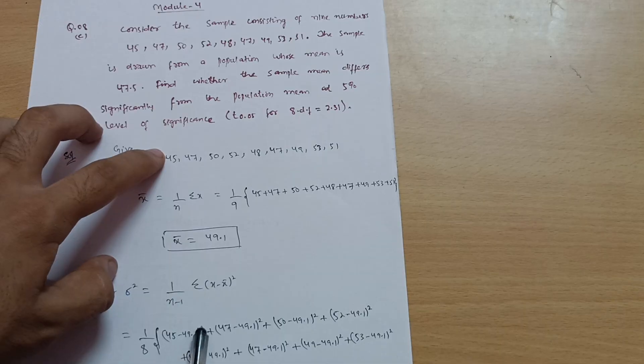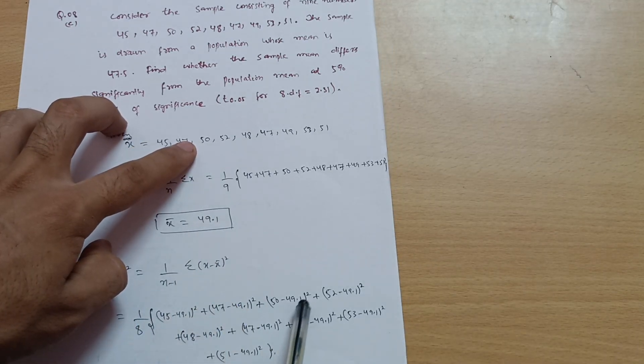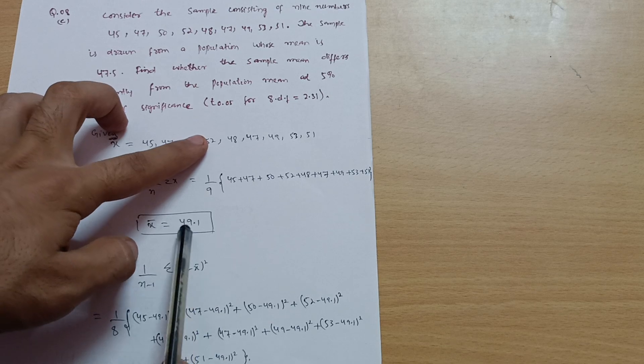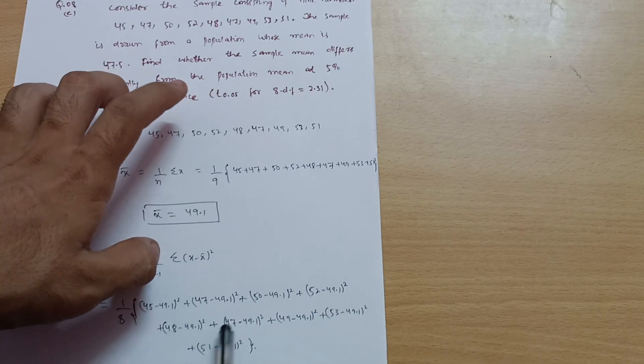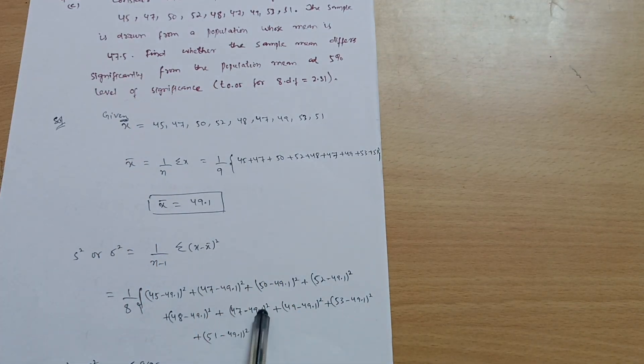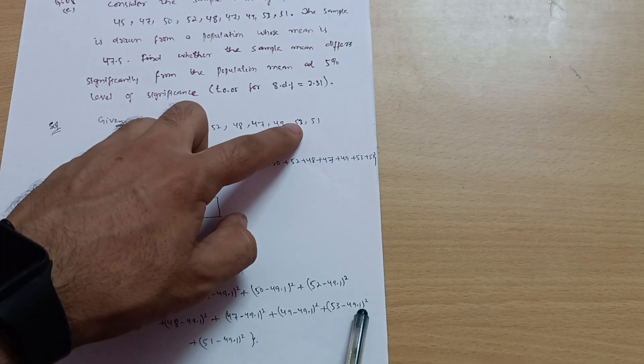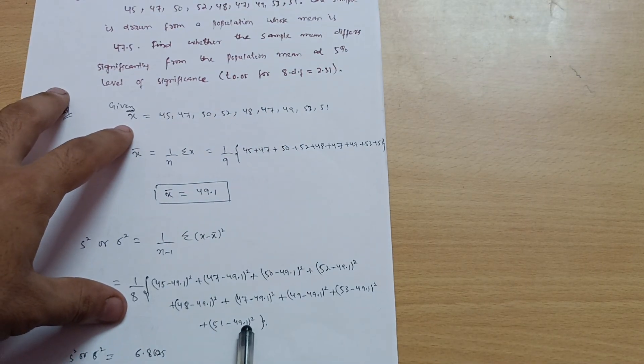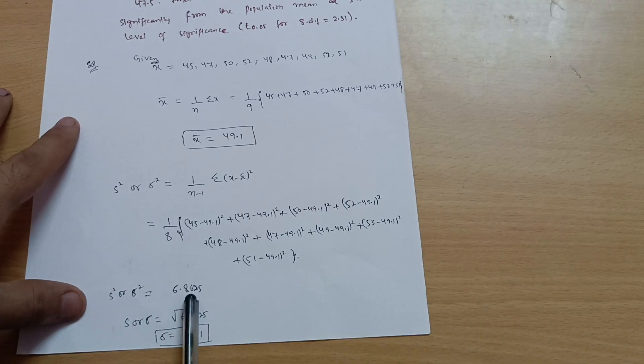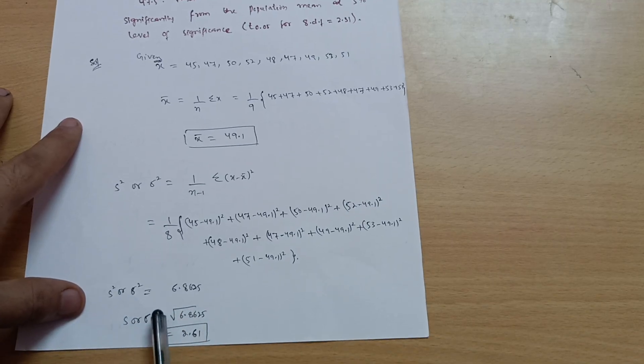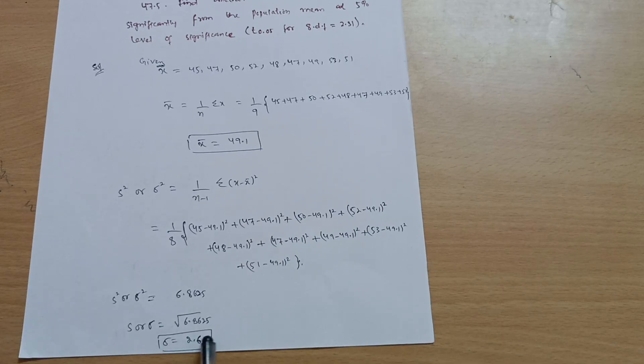So 45 minus 49.1 whole square plus we have to take the summation: 47 minus 49.1 whole square, 50 minus 49.1 whole square, then 52 minus 49.1 whole square, then 48 minus 49.1 whole square. So likewise you have to take the summation: 47 minus 49.1 whole square, 49 minus 49.1 whole square, plus 53 minus 49.1 whole square, plus 51 minus 49.1 whole square. This is the summation of X minus X bar. While calculating this much, you will get sigma square is equal to 6.8625. So simply sigma you will get under root of square. If you are shifting on the right hand side, you will get root of 6.86, so sigma value is equal to 2.61.